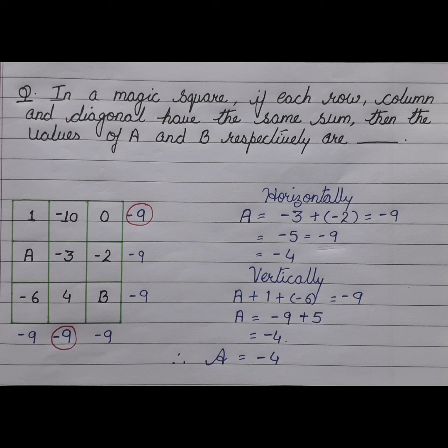Let us calculate A vertically. Here A plus 1 minus 6 is equal to minus 9. A is equal to minus 9 plus 5 which is again minus 4. So here I will get the answer A as minus 4.